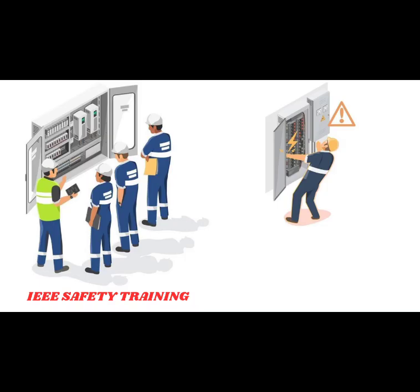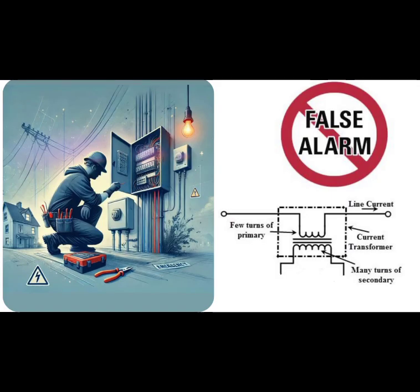Creating them as integral components of protection and measurement devices also implies that protective measures must be in place to avoid open circuit scenarios. Number five, protection system malfunction. In protection schemes, current transformers are used to detect overloads, short circuits, and other fault conditions.